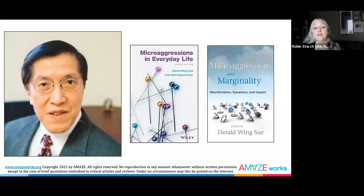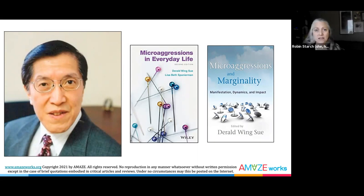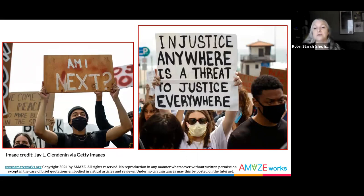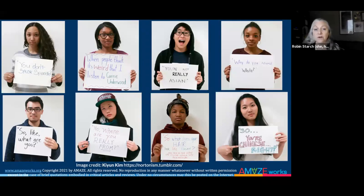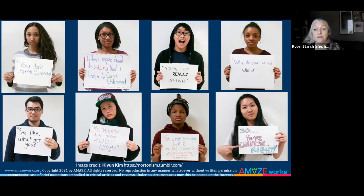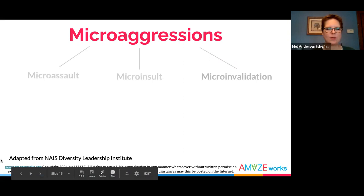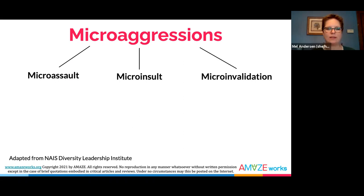Psychologist, author, and Columbia University professor Daryl Wing Sue describes microaggressions as the everyday slights, indignities, put-downs, and insults that people of color, women, LGBTQ populations, or those who are marginalized experience in their day-to-day interactions with people. Microaggressions often appear to be a compliment but contain a metacommunication or hidden insult to the targeted groups. People who engage in microaggressions are ordinary folks who experience themselves as good, moral, decent individuals, but microaggressions occur because they are outside the level of conscious awareness of the person giving the comment. Sue and other researchers identified three types of racial microaggressions, which have since been expanded to include experiences of other marginalized identities.